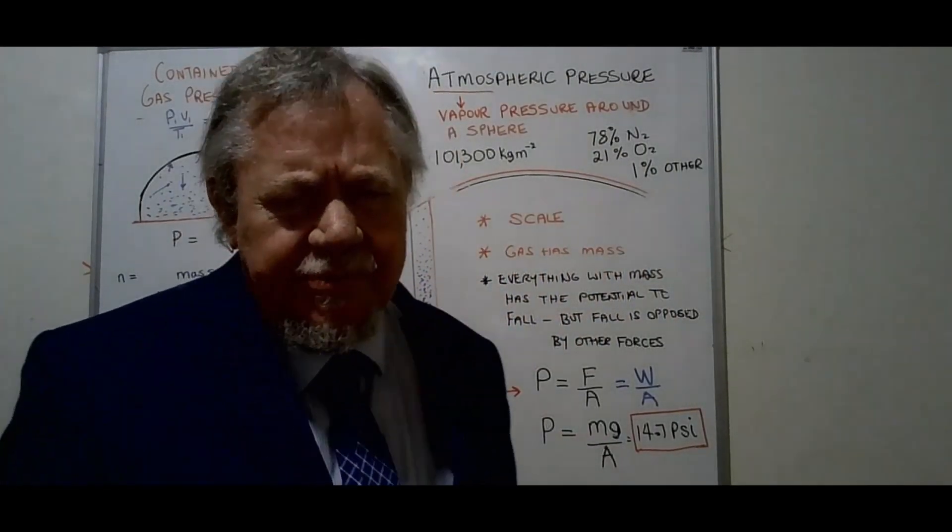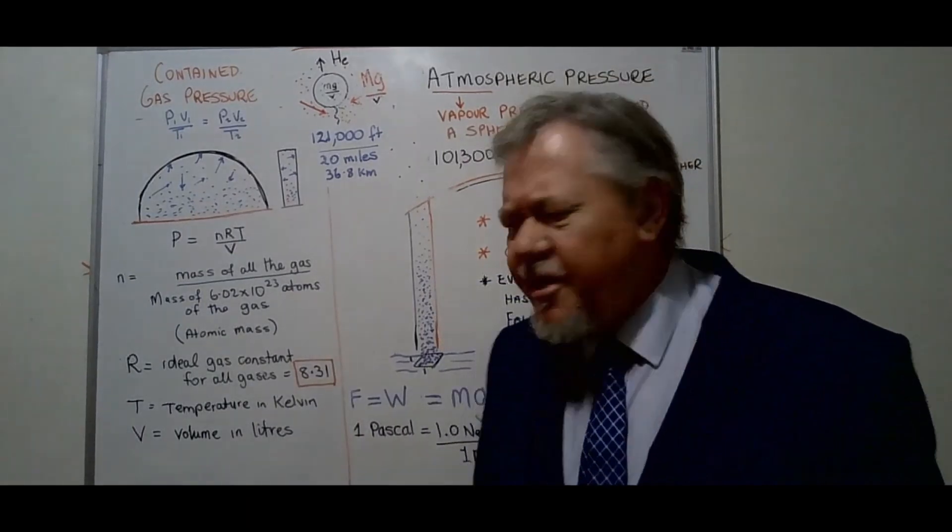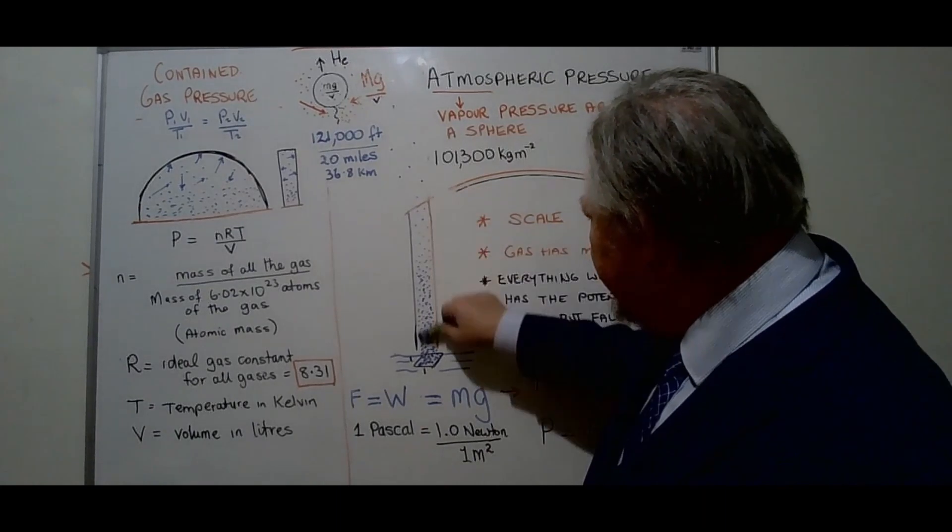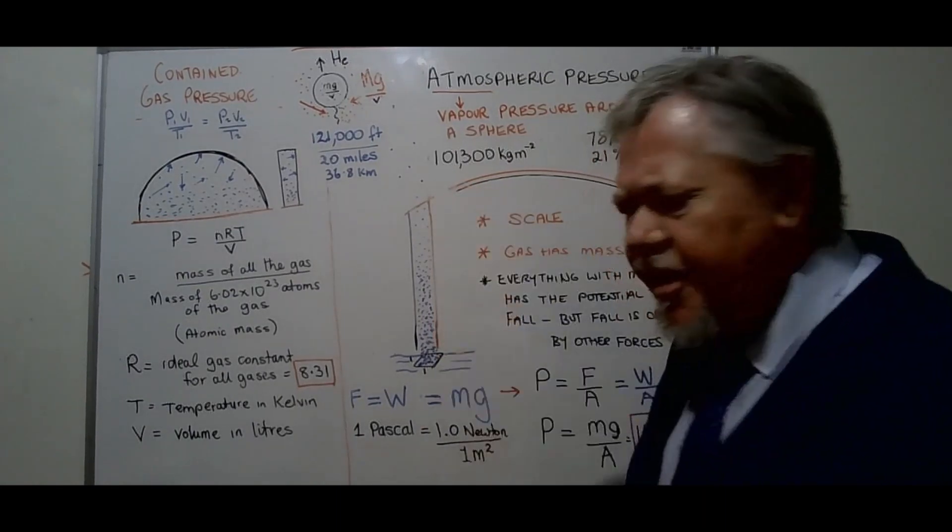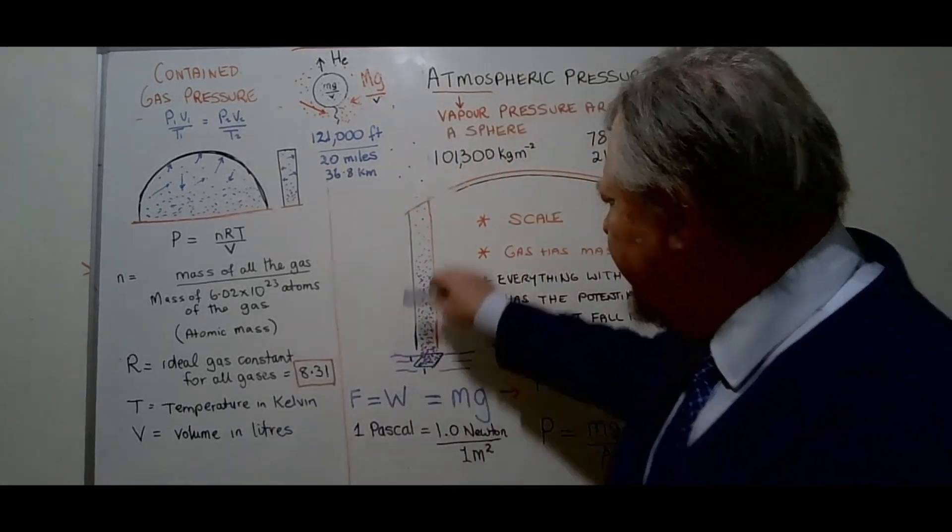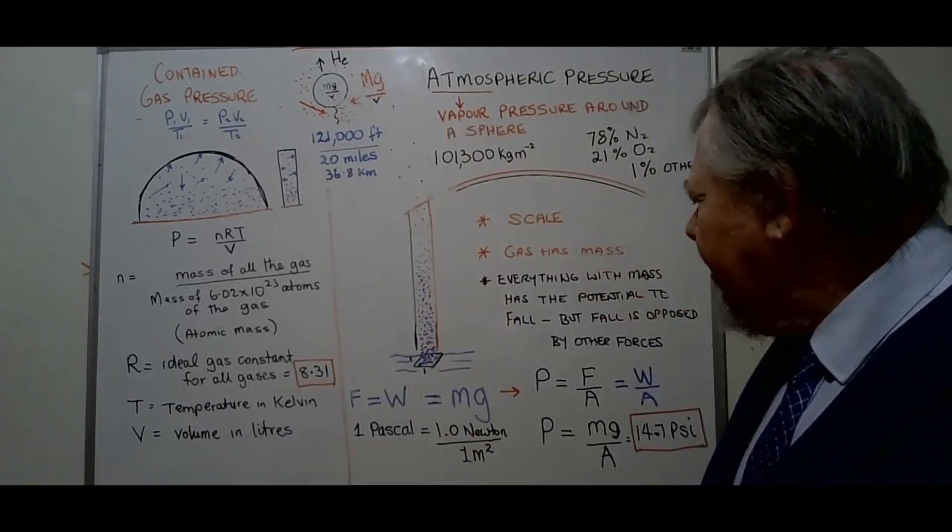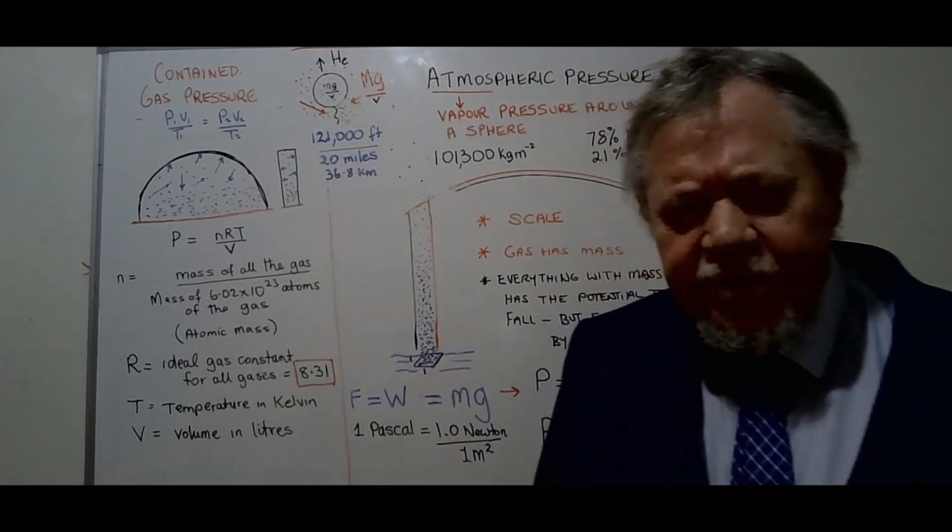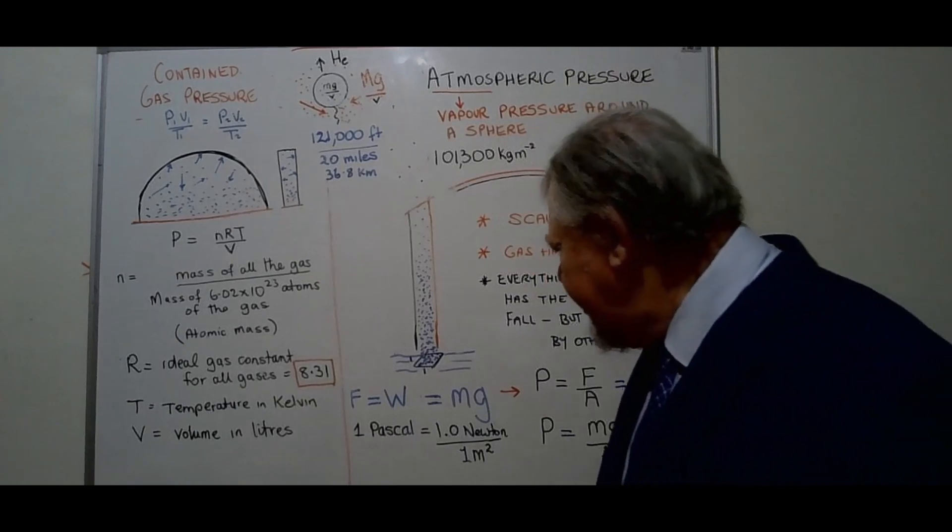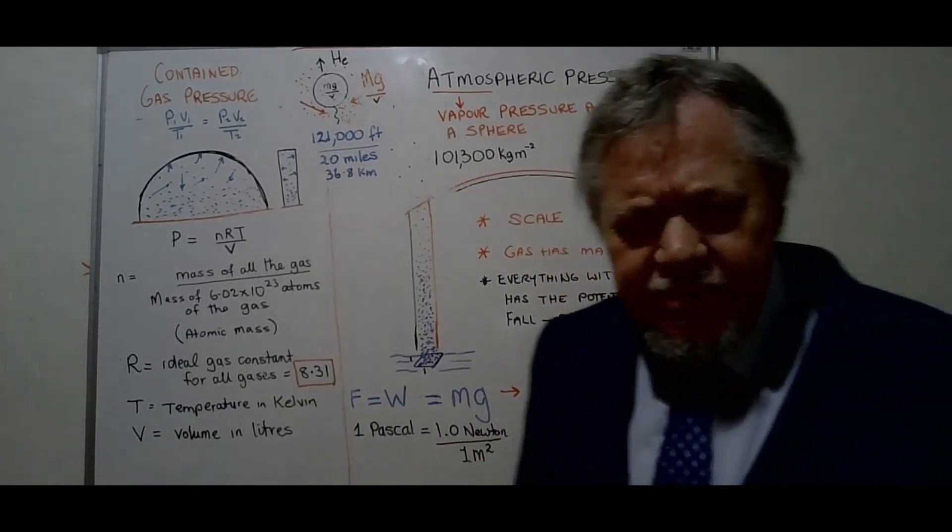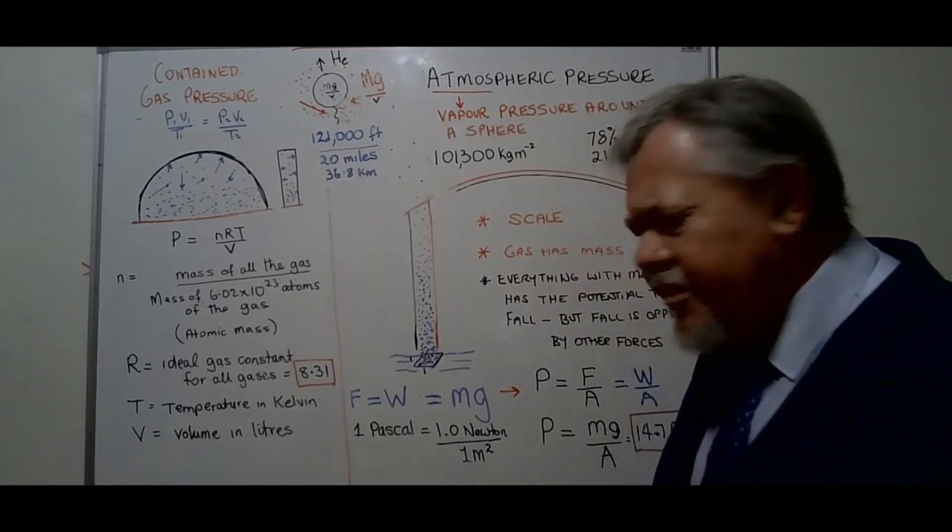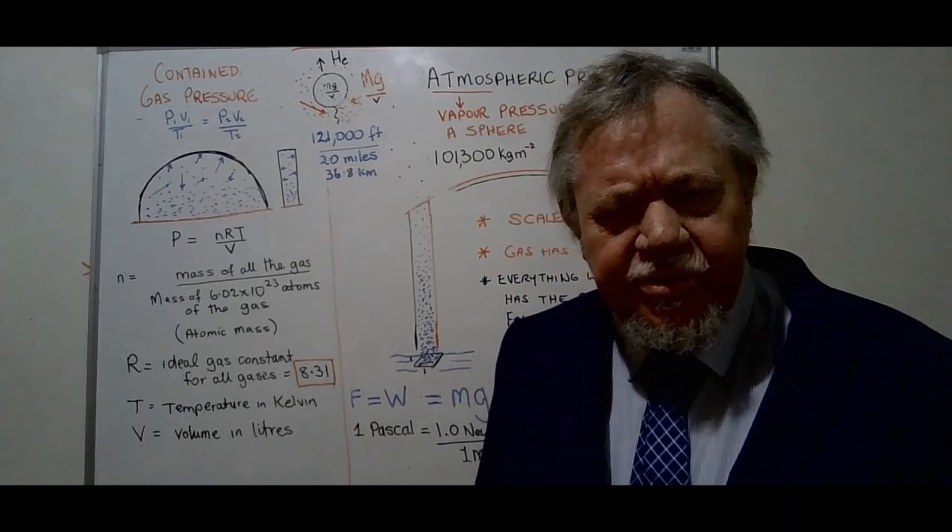Okay, so that is the mass, the weight of all of this gas that's in that column. Okay, mass of all of this in that column over one square inch. Now if we're talking about pascals, then pascal is one newton over a square meter. All right, so a newton is a unit of force which is also weight.